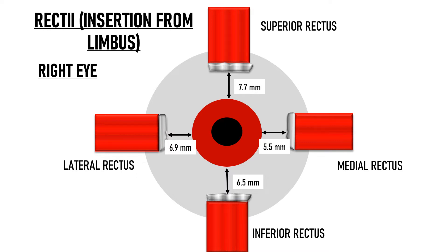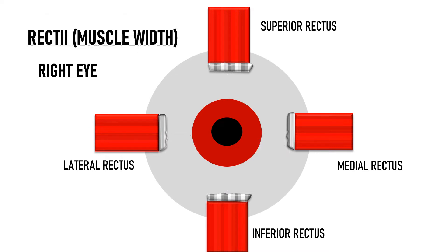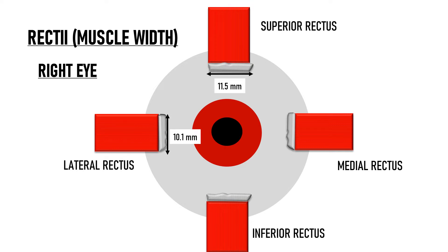Of all the recti, the medial rectus has the shortest tendon at about 4.5 mm long. Of all 6 extraocular muscles, the inferior oblique has the shortest tendon at only 1 mm long. The width of the recti at insertion averages 10 mm: lateral rectus is 10.1 mm, superior rectus 11.5 mm, inferior rectus 10.5 mm, and medial rectus 11.3 mm. These are average values and vary widely.